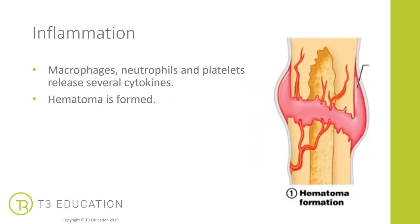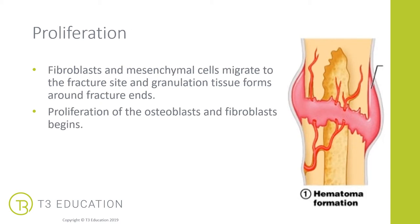During the inflammation phase of a fracture, similarly to regular tissue healing, macrophages, neutrophils, and platelets release several cytokines to help create the inflammatory response, and a haematoma forms around that bony area. Next is the proliferation phase, where the fibroblasts and mesenchymal cells migrate to the fracture site and form granulated tissue around the fracture ends. This is where the proliferation of osteoblasts and fibroblasts begins to repair the tissue.